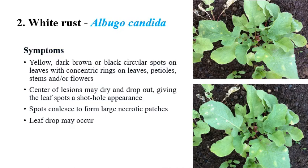The next disease is white rust. The name itself indicates white color — rust pustules or patches can be seen on leaves. White rust is caused by Albugo candida. White circular spots can be seen on leaves; the disease is mostly confined to leaves, though it can sometimes be observed on flowers and stems as well.